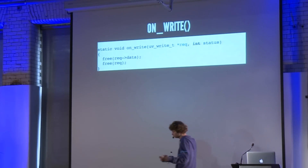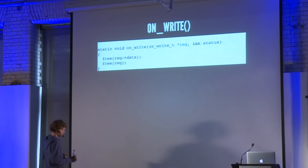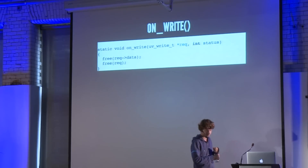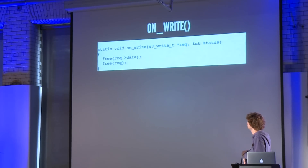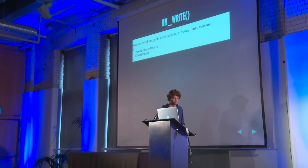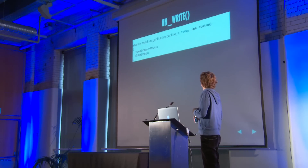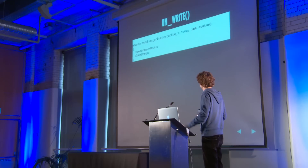This is the final function: onWrite. This is called once libuv has sent out our message. In this particular implementation, it doesn't do anything really spectacular — it just frees the data that we allocated on the previous slide. In a more robust implementation, you would check the status code to see if any errors had happened while sending data. But in this case it doesn't really matter — if sending the message fails, we still need to free the memory, so that's all it does.